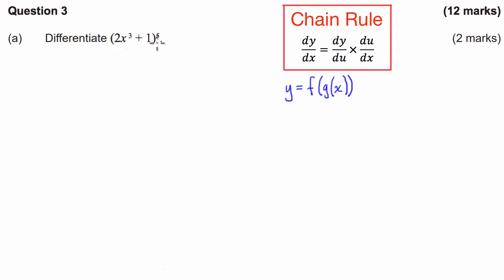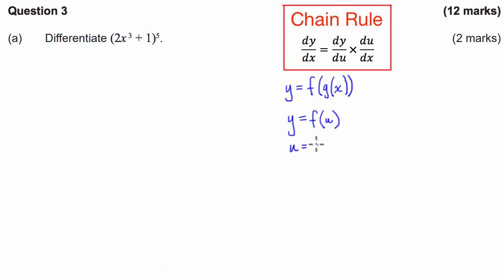The way we're going to use the chain rule to differentiate functions like this is: when we have a function contained within another function, we substitute the inside function for a substitution variable. So rather than having g of x inside our outside function, we would have y as a function of u, and then u is going to be a different function which we call g of x.